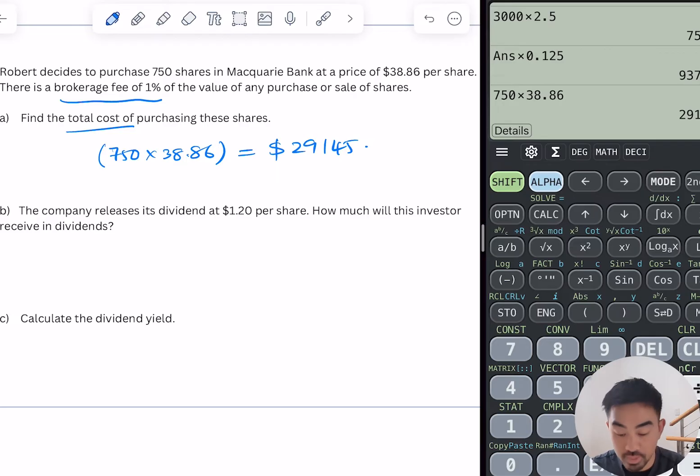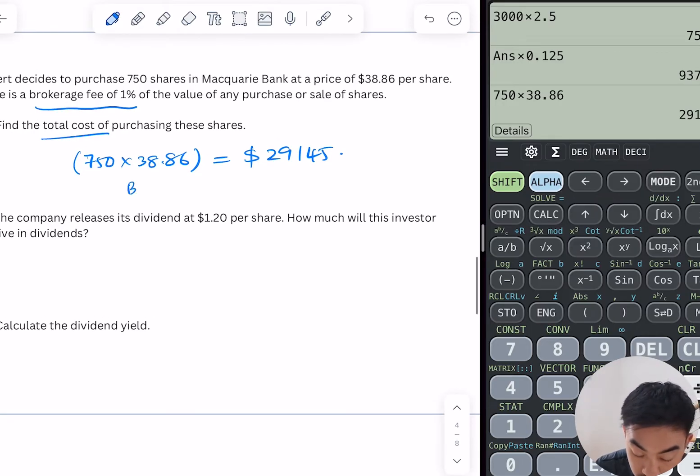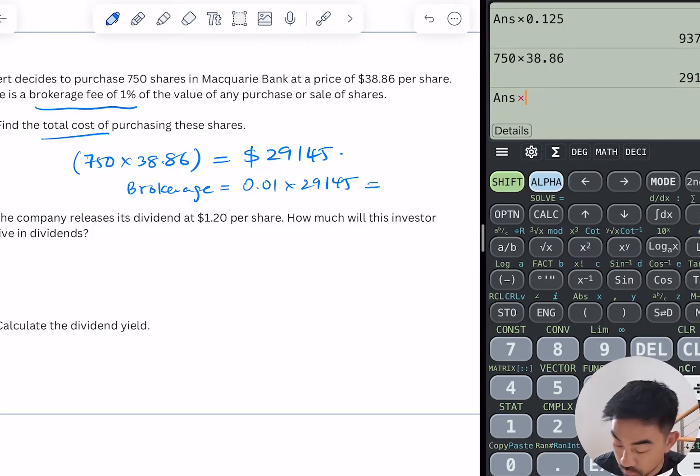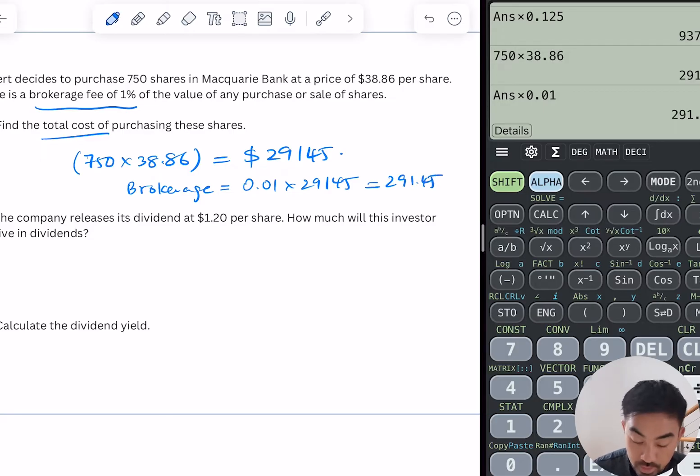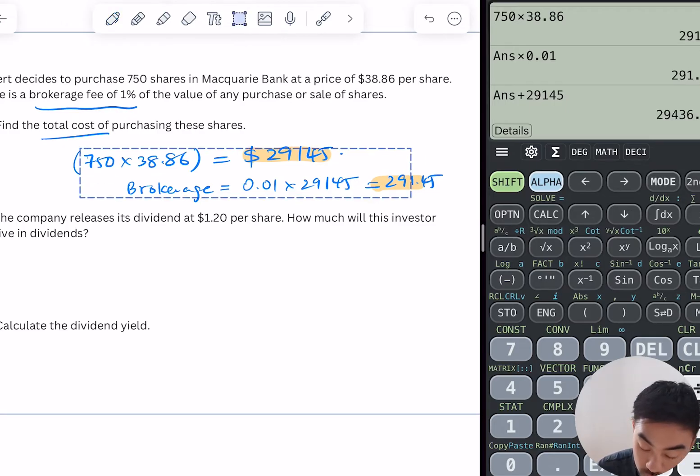So that's gonna be $29,145. Now there's also a brokerage of 1%, so I need to add on the brokerage which will be 1% of the above. So it's 0.01 times 29,145. So that's $291.45. All I need to do is add that and that will be my answer for the total cost. So plus 29,145.